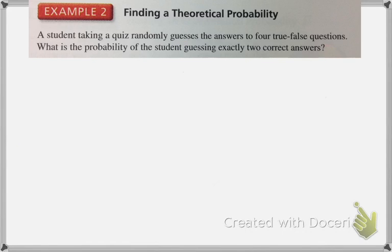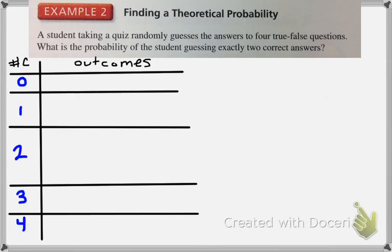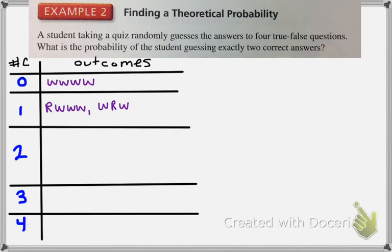So let's try to actually find the theoretical probability. We have a student taking a quiz who randomly guesses the answers to four true or false questions. What is the probability of the student guessing exactly two correct answers? First we're going to find the total number of outcomes by making a chart. The student could get none correct, one correct, two, three, or four correct. If the student gets zero correct, there's only one way — to get all four wrong. If the student gets one correct, it could be the first one right, or the second, third, or fourth.